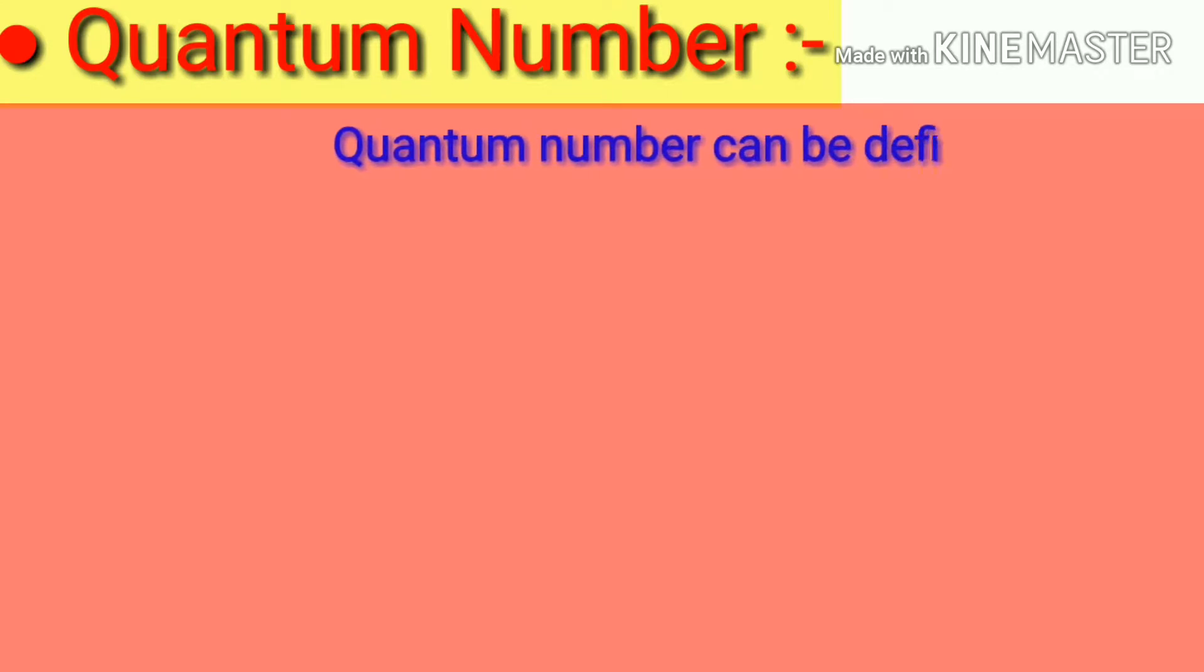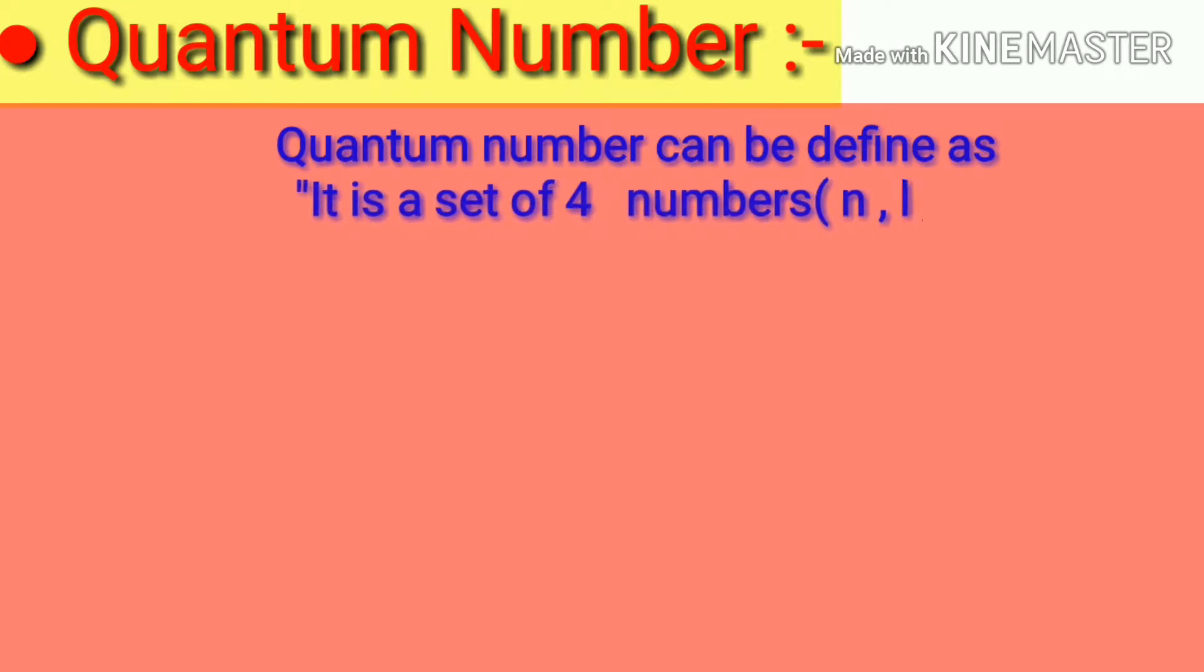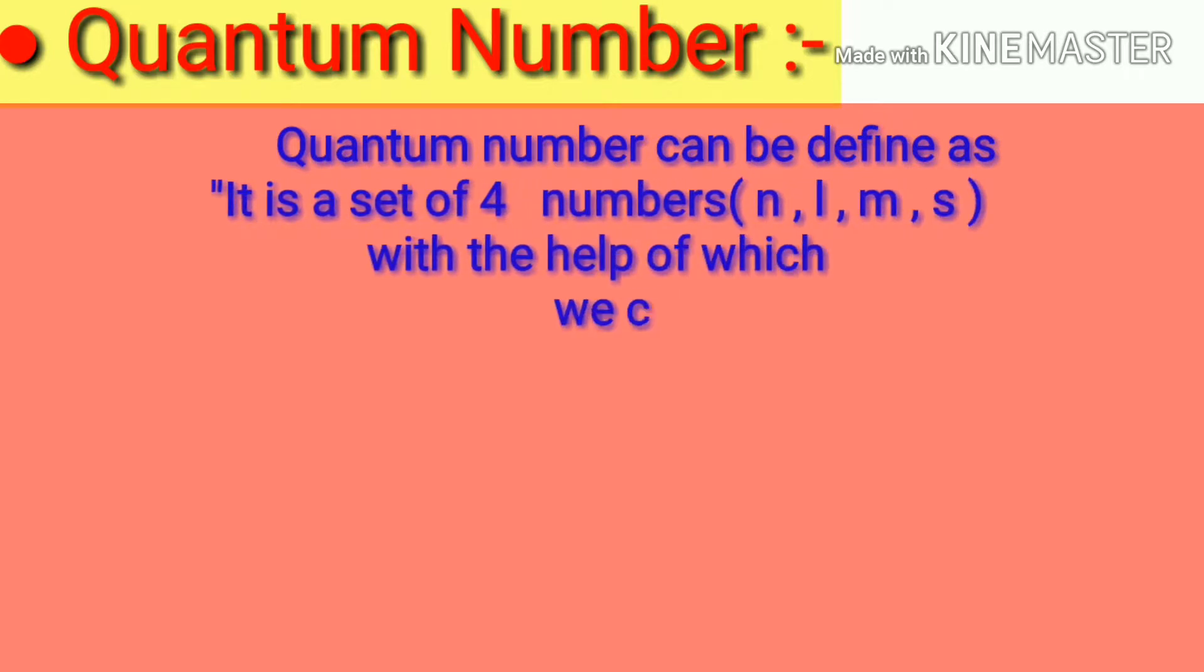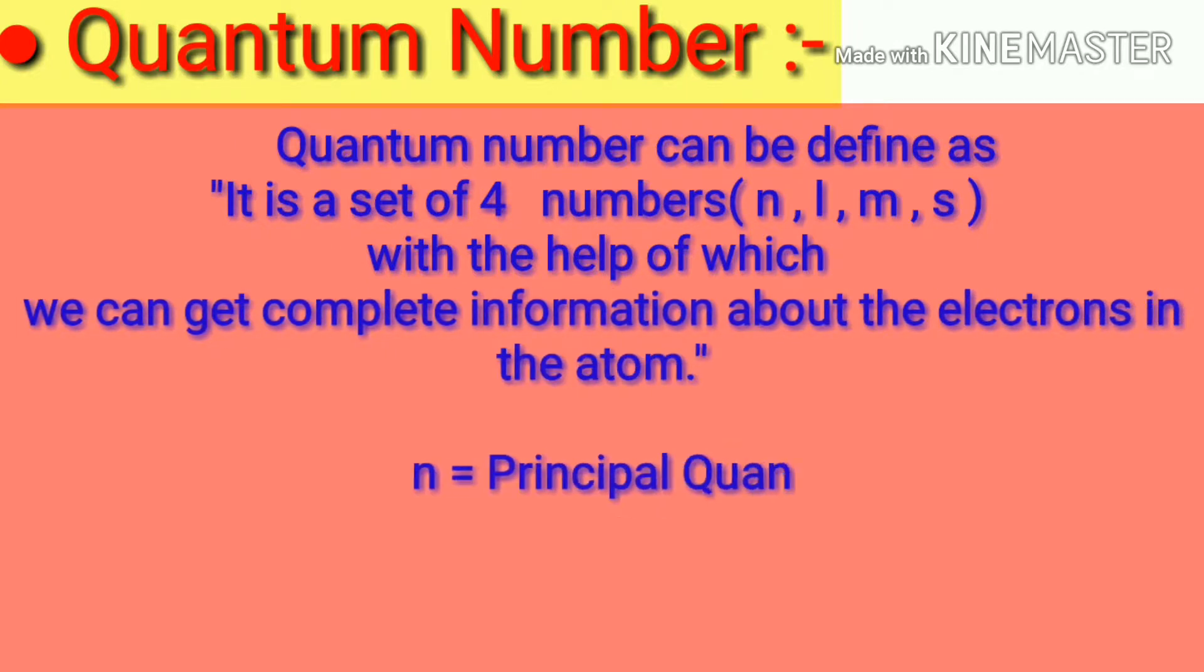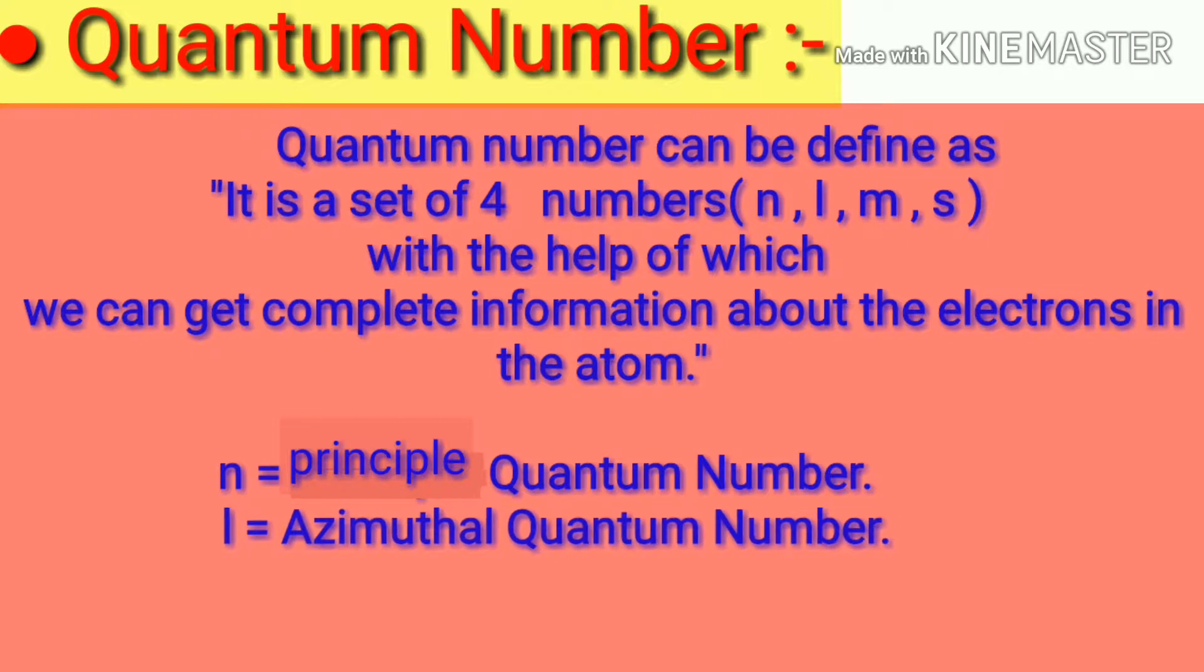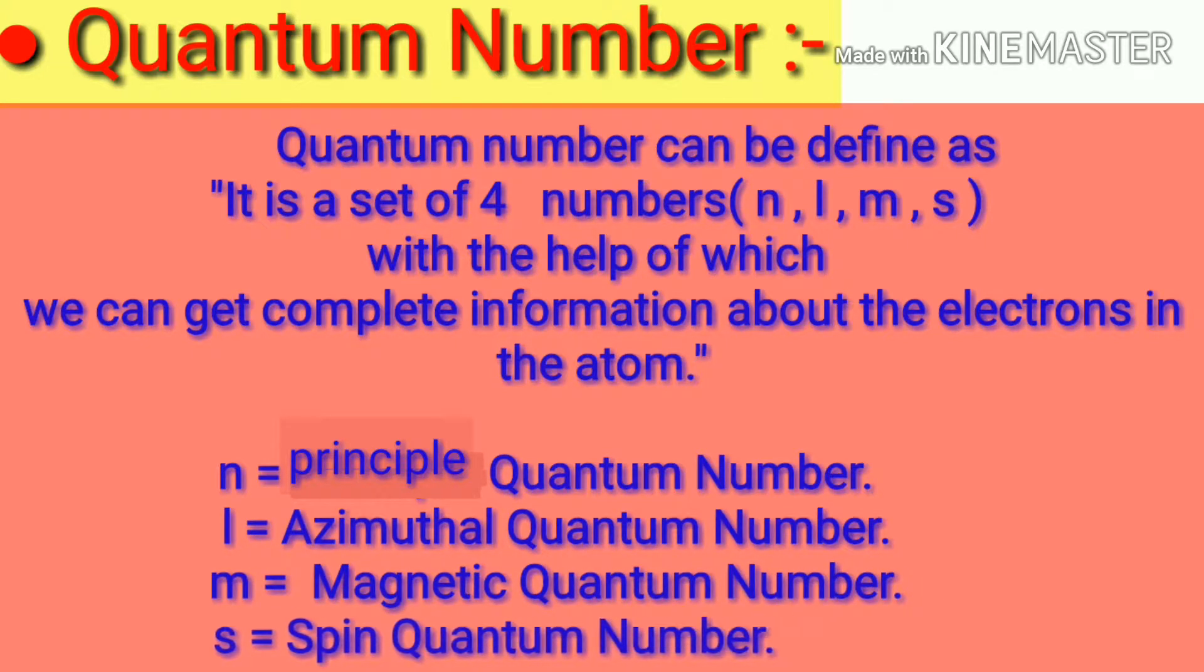Quantum number can be defined as a set of four numbers: n, l, m, s. With the help of which we can get complete information about the electrons in the atom. N indicates principal quantum number, L indicates azimuthal quantum number, M indicates magnetic quantum number, S indicates spin quantum number.